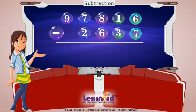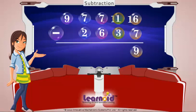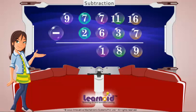6 is less than 7, so we have to borrow 1 from 2. Now 16 minus 7 is 9. 1 is less than 3, so we have to borrow 1 from 8. Now 11 minus 3 is 8. 7 minus 6 is 1. 7 minus 2 is 5. 9 minus 0 is 9.